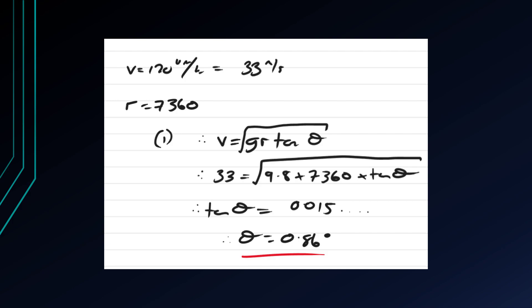So first we have to convert 120 kilometres an hour into metres per second which should be fairly rudimentary and you get 33 metres per second. And the radius is 7360.